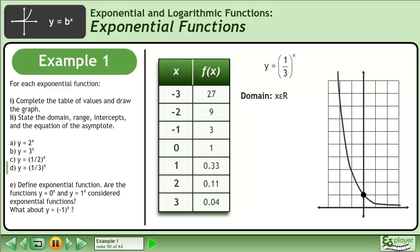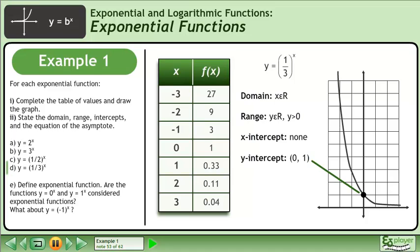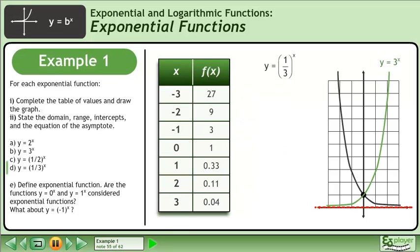The domain is x belongs to the set of real numbers. The range is y belongs to the set of real numbers, with the restriction that y is greater than 0. There is no x-intercept. The y-intercept is (0, 1). The equation of the asymptote is y equals 0. The graph of y equals 1 third to the power of x is the reflection of y equals 3 to the x across the y-axis.